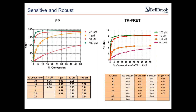All competitive binding assays are nonlinear by nature; running a standard curve under identical conditions and interpolating unknown values is how you convert to linear data. At 10 micromolar, for example, 10% conversion means 1 micromolar AMP plus 9 micromolar ATP. Even at very low conversion — 5% or 1% — you still get a Z-prime above 0.7 for both TR-FRET and FP. A Z-prime greater than 0.5, according to NIH assay guidelines, is considered very good for biochemical screening.